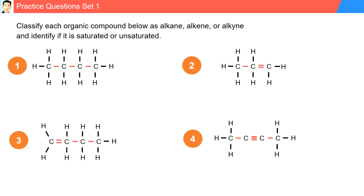Practice questions, set one. Classify each organic compound below as an alkane, alkene, or alkyne, and identify if it is saturated or unsaturated. For question one, there are four carbon atoms, and between the carbon atoms there are single bonds. You might say there are three bonds between the carbons and want to classify it as an alkyne — that would be incorrect. Because between two adjacent carbon atoms there are only single bonds, this is an alkane, and alkanes are saturated.